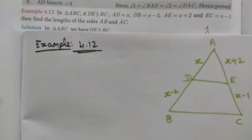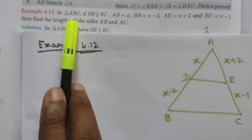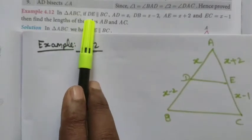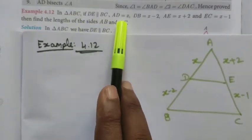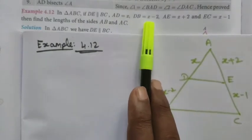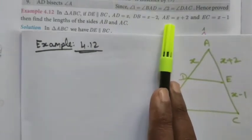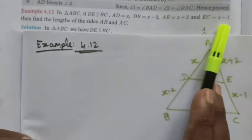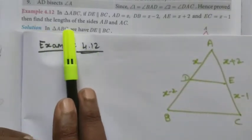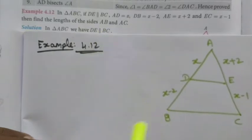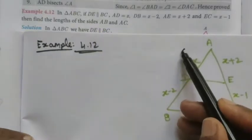Hi students, class 10 example sum 4.12. In triangle ABC, if DE is parallel to BC, AD is equal to x, DB is equal to x minus 2, AE is equal to x plus 2, and EC is equal to x minus 1. Find the lengths of sides AB and AC.